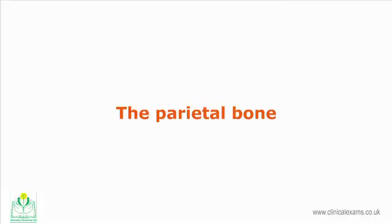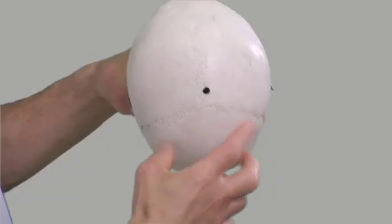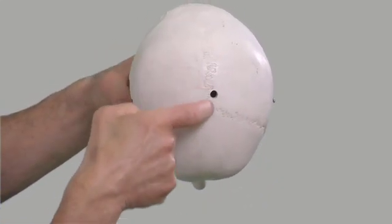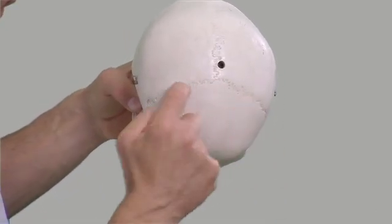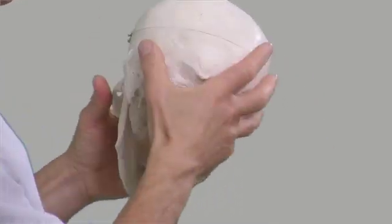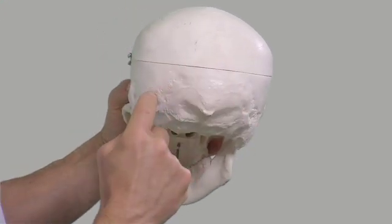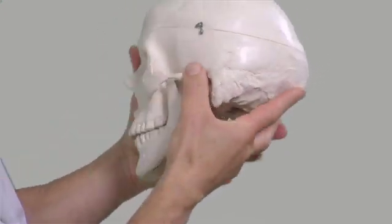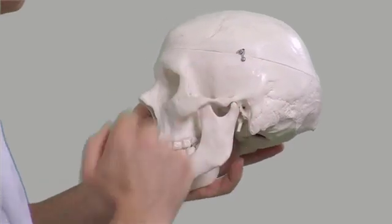The parietal bones are a pair of large flat bones that form the roof of the cranium. They are united in the mid-sagittal plane by the sagittal suture. Anteriorly they articulate with the frontal bone via the coronal suture, and laterally they articulate with the temporal and sphenoid bones.